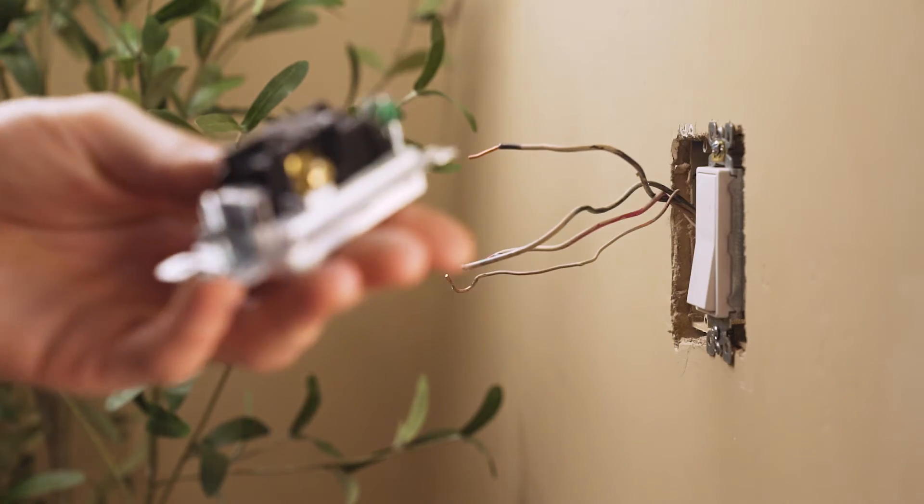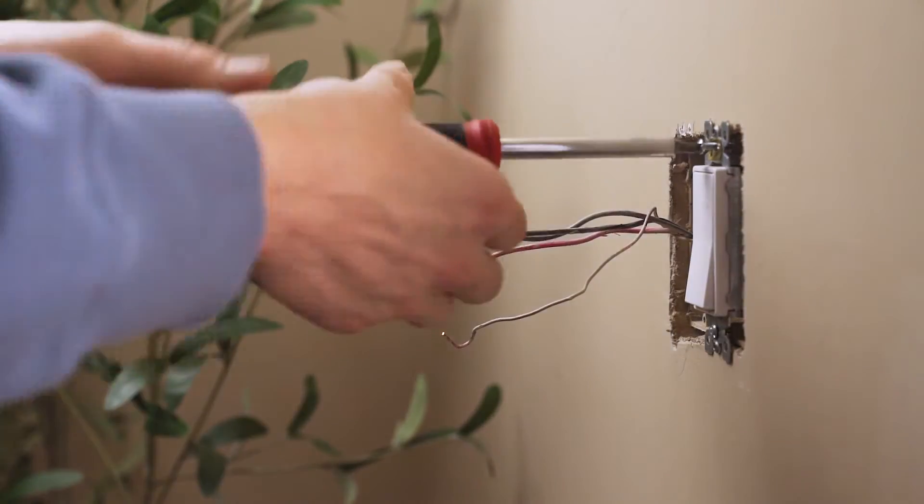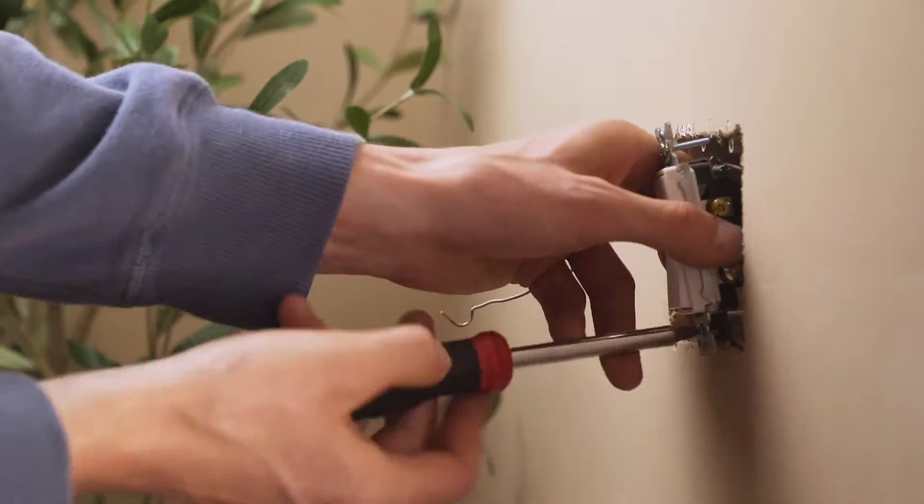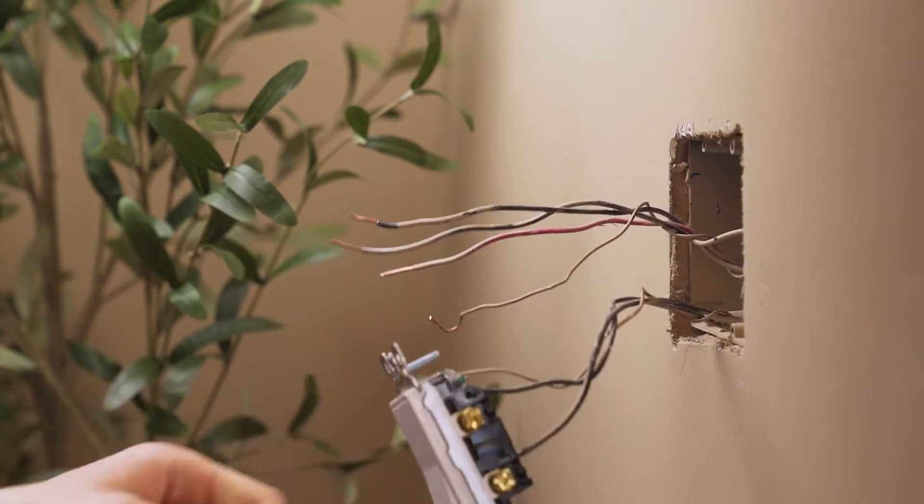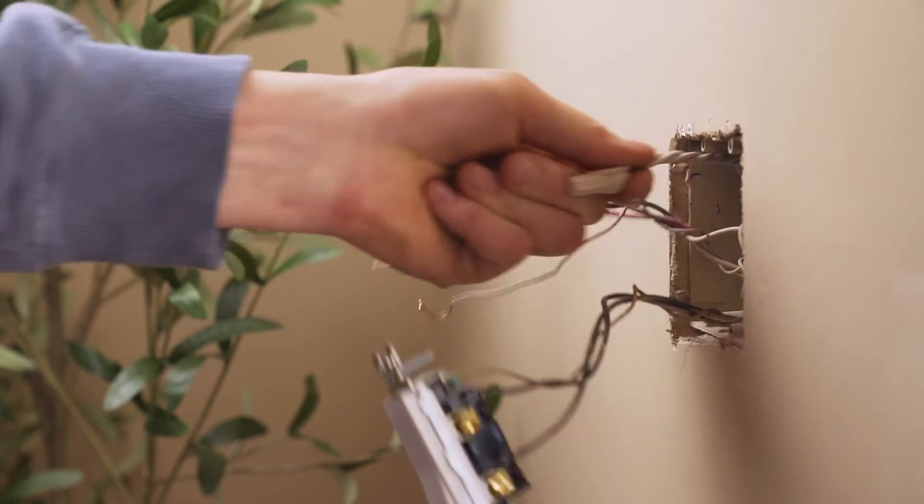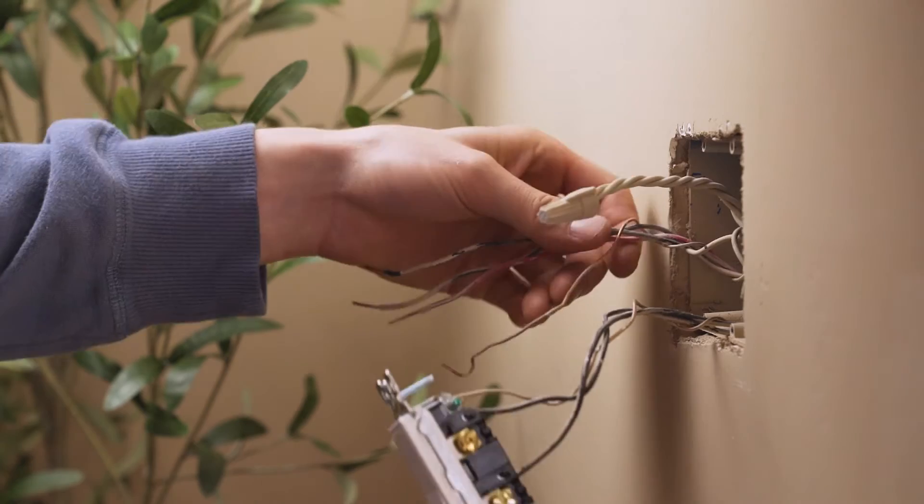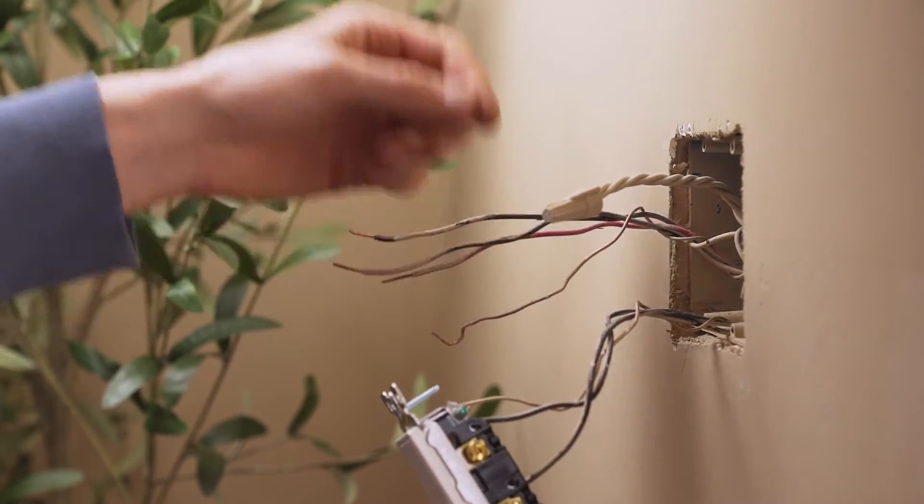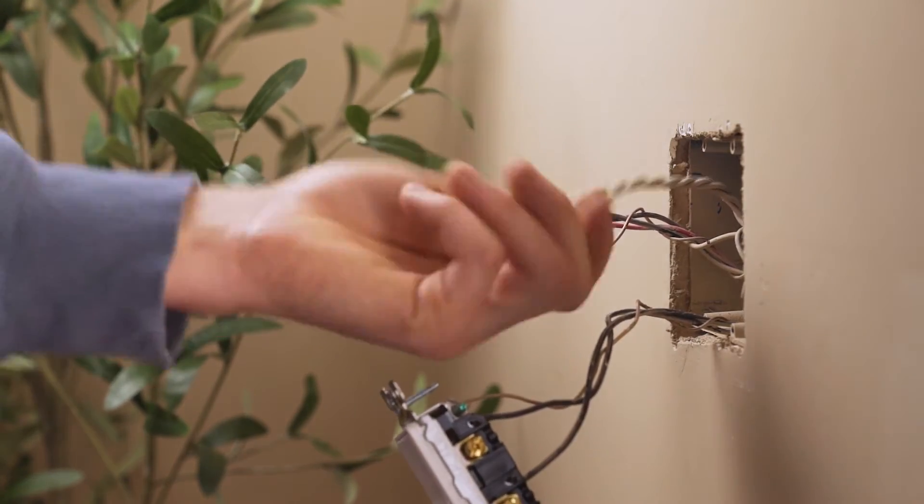Remove the wires from the back of the original light switch. Now take out your other light switch, which goes to a different room. We're leaving this switch in but taking it out to access the neutral wires typically located in the back of the light switch box.